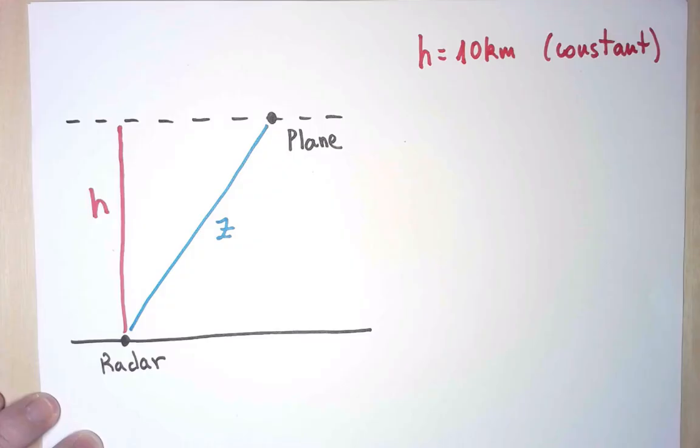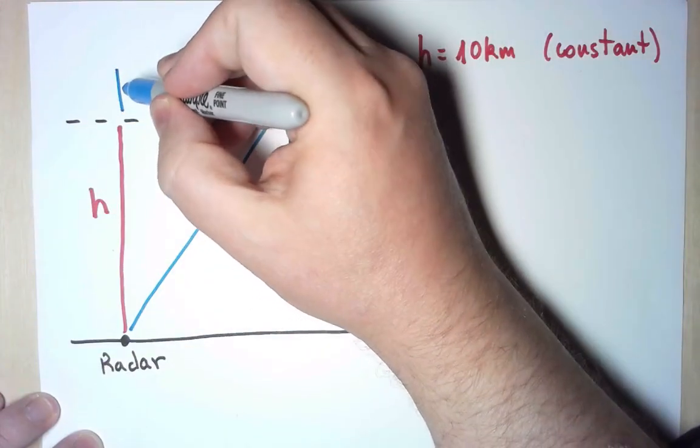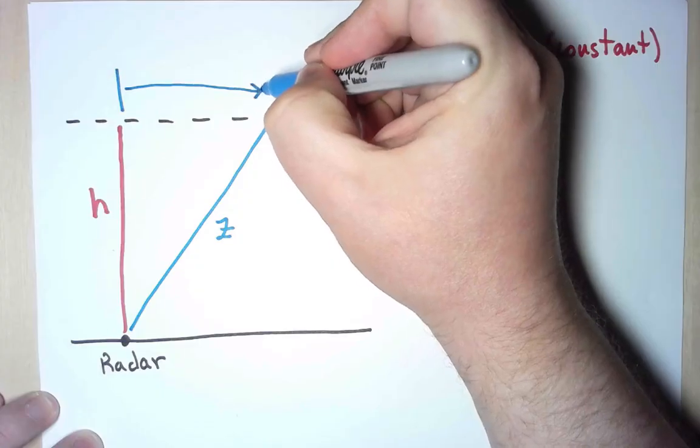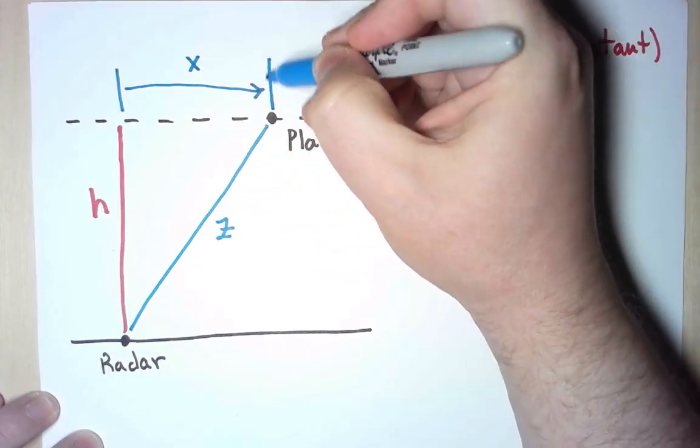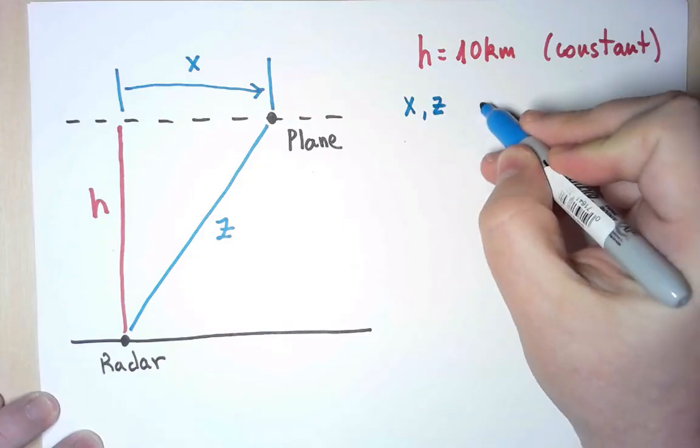On the other hand, I'm interested in the velocity of the plane, the speed of the plane. And the velocity is going to be the rate of change of the horizontal position. So I'm going to call x the horizontal position of the plane. Notice that both x and z depend on time.